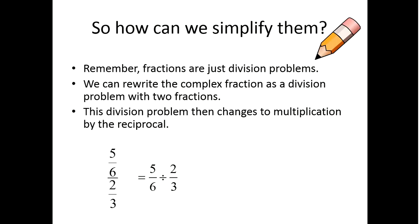This is the same problem: five-sixths divided by two-thirds. All I did is took the first fraction, put it first, divided by the second fraction which was on the bottom. So all I then have to do is change to multiplication — that means flipping that second fraction or taking the reciprocal — and then multiplying across and canceling, because fifteen over twelve I could simplify.